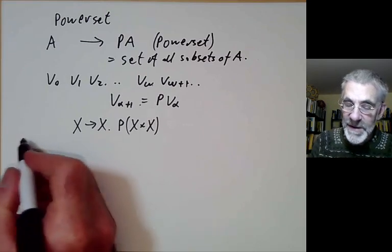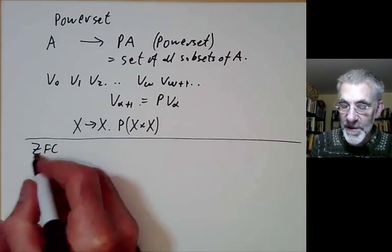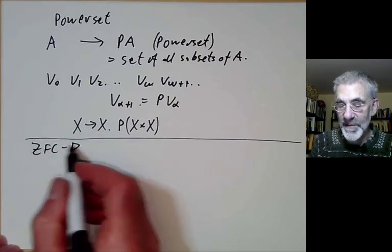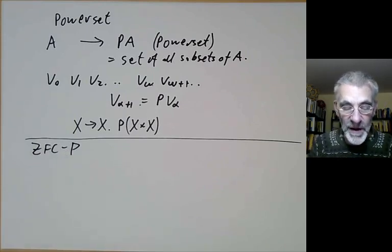So we can also ask what happens if you take the Zermelo-Fraenkel set theory, denoted by ZFC, and remove the power set axiom. So this is often known by ZFC minus P. And what do models of this look like?